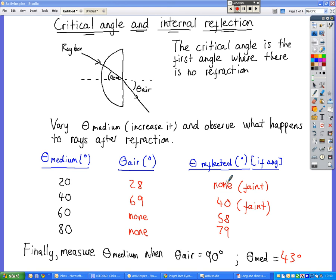Let's look at the critical angle and internal reflection. The critical angle is the first angle where there is no refraction. Normally we would expect light to pass through glass. We can see light passing through windows, so we know that that happens, so we get refraction occurring.